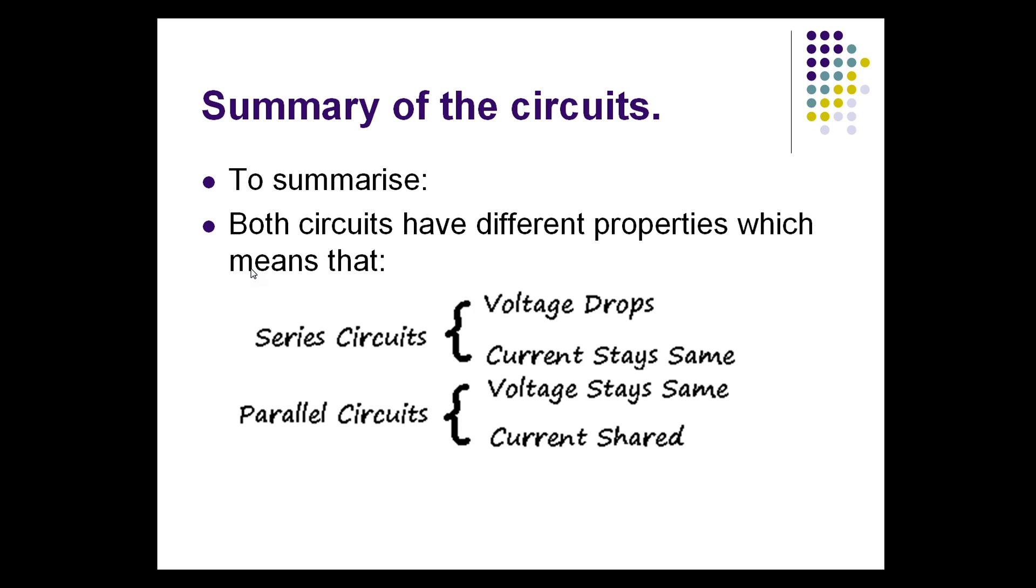Moving on. This is a summary of the circuits. Both circuits have different properties which means that in a series circuit, voltage drops, current stays the same. In a parallel circuit, voltage stays the same, current is shared.